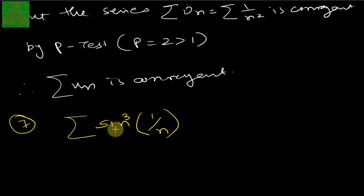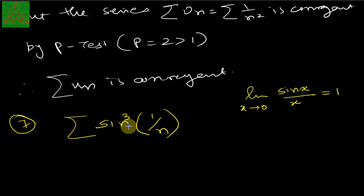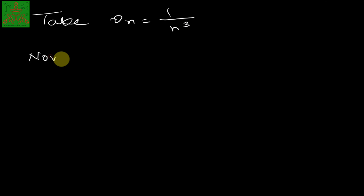The seventh example: test the convergence of summation of sin³(1/n). We recall the standard limit: lim(x→0) sin(x)/x = 1. We take v_n = 1/n³, and note that as n → ∞, 1/n → 0, so sin(1/n) / (1/n) → 1. Therefore the limit of u_n / v_n = [sin³(1/n)] / [1/n³] = [sin(1/n)/(1/n)]³.